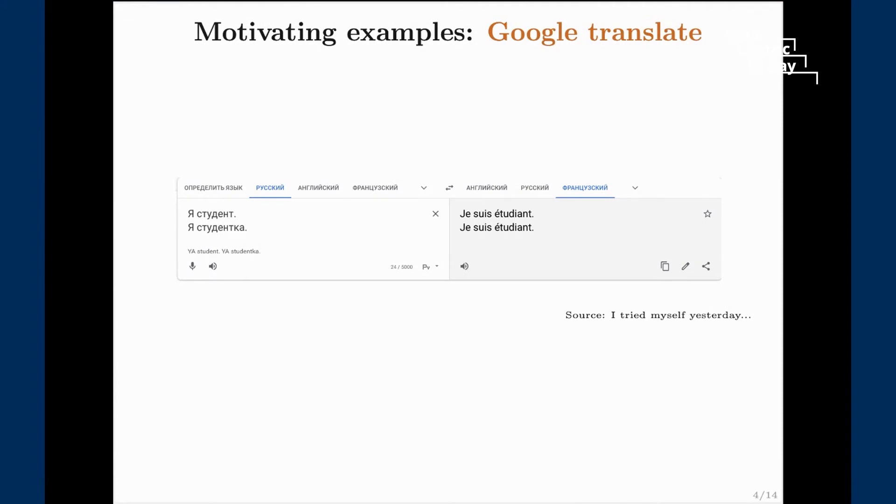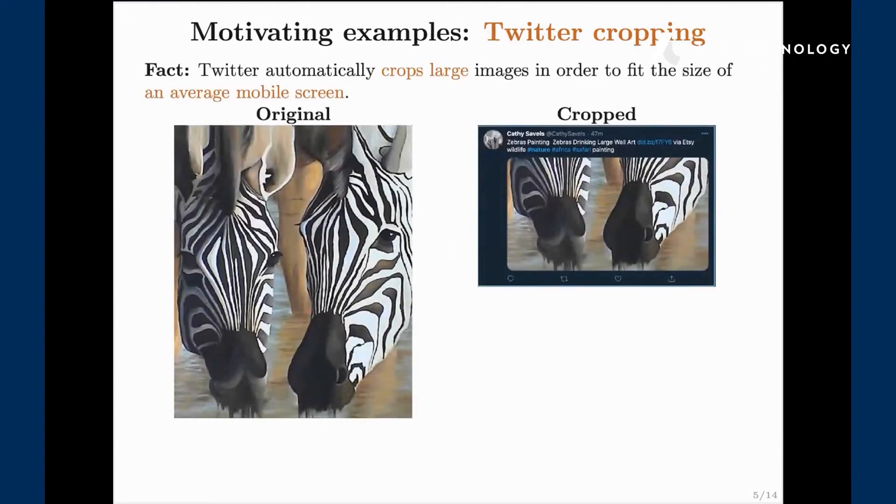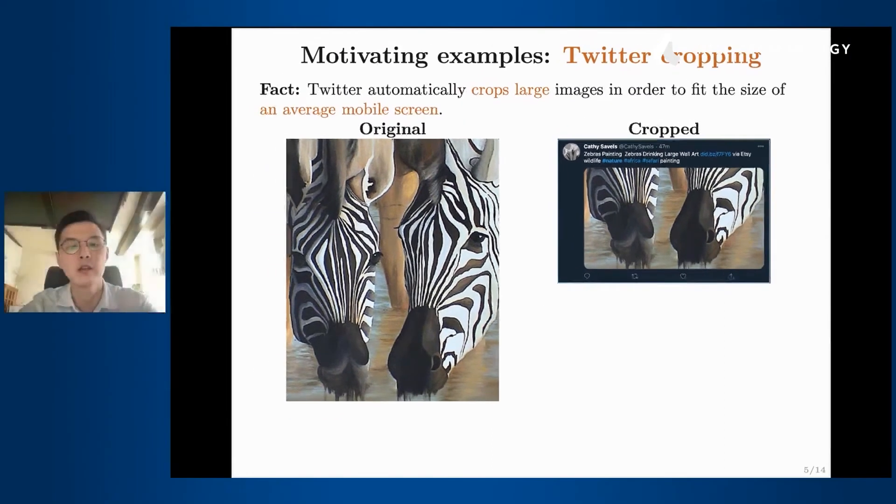The second example is quite famous right now, it's with Twitter cropping. If you want to upload an image to your Twitter post and this image is fairly large, because of the constraint of the size of the screen of the phone, Twitter is going to crop this image and focus on some sub part of the image. Let's say we are uploading this drawing of zebras and that's something like this you're going to see on your Twitter feed.